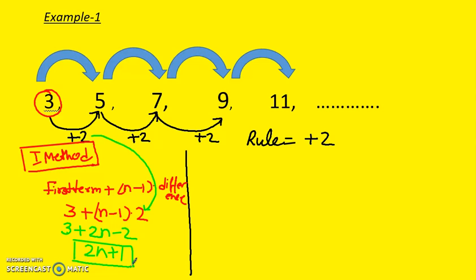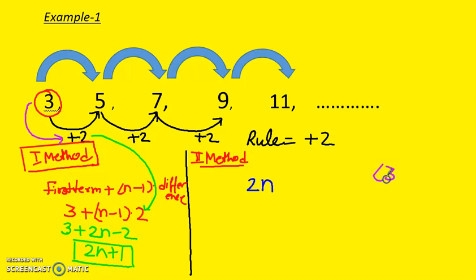Now the second method, which is quite easy. You write down the first term: 3, 5, 7, 9. The difference is 2, so the difference is multiplied by n, giving 2n. Then you find the difference between the first term (3) and the common difference (2): 3 take away 2 is plus 1. So we write down 2n plus 1.